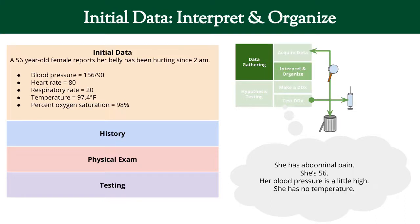The next thing you do is interpret and organize. So what's our problem list? She has abdominal pain, she's 56 — maybe that's important — her blood pressure is a little bit high. We also know that she doesn't have a temperature, and you'll see why that's important later.